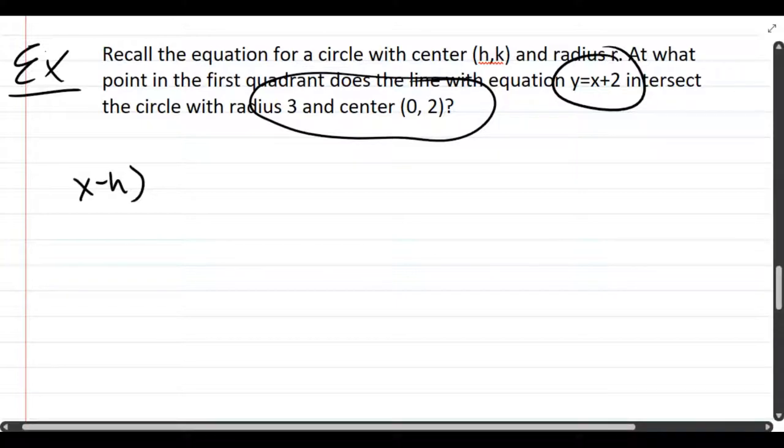So let's recall the equation by writing it down: (x - h)² + (y - k)² = r². Radius is 3, so we have 3 squared. Center is (0, 2). x minus 0 is just x, y minus 2 squared equals 3 squared. This is the equation of our circle.